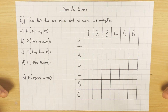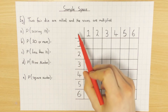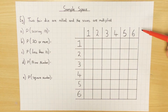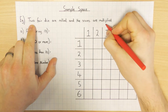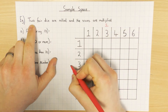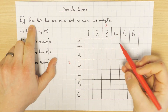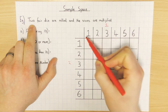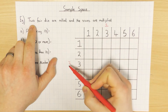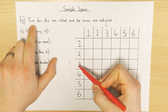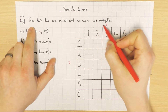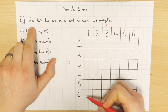In my first example I've got two fair dice, I roll them and then I multiply the scores. This is what a sample space looks like. I've got two dice - dice number one and dice number two. You write out all the possible outcomes for the first dice: one, two, three, four, five, six, and the second dice is the same.